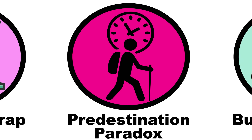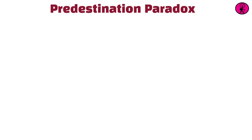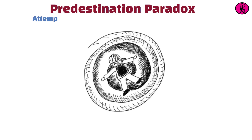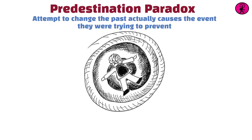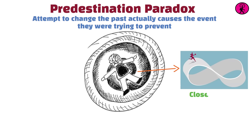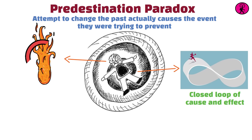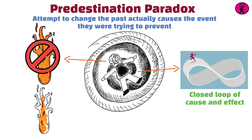The predestination paradox occurs when a time traveler's attempt to change the past actually causes the event they were trying to prevent. In this scenario, the time traveler's actions become part of the established timeline, creating a closed loop of cause and effect. For instance, a time traveler goes back in time to prevent a fire, but accidentally causes the fire in their attempt to stop it.